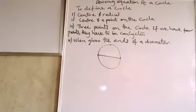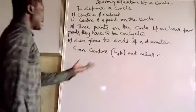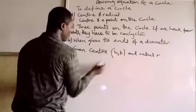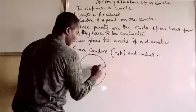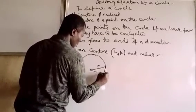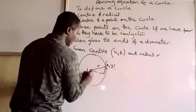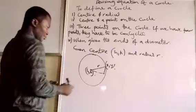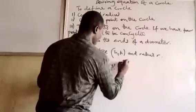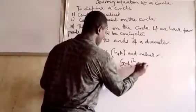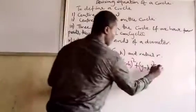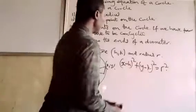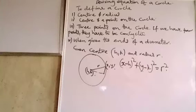Let's start with center and radius. If we are given center h, k and we are given the radius r, all we need to do is look at it like this. We know that x minus h squared plus y minus k squared is equal to the distance squared, which is r squared — same as Pythagorean theorem. By solving this, you have already answered the equation once you are given the center and the radius.